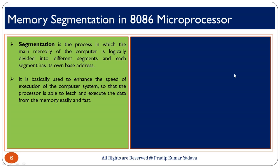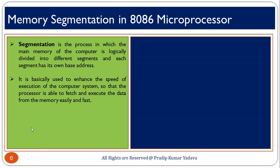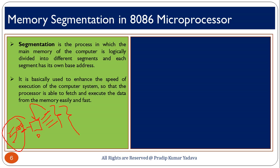The question is how segmentation enhances the speed of execution of a computer system. Just take an example: suppose in your computer you have made only one drive, D, and all your information, data, movies, and music are stored in that same drive. Now suppose it contains around 5000 files. Now you have to find a particular file — you have to search within all 5000 documents, which will definitely take time.